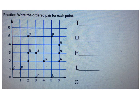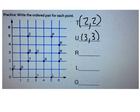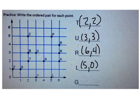Now you try a few. What's the ordered pair for point T? It's (2, 2). What's the ordered pair for point U? It's (3, 3). What's the ordered pair for point R? It's (6, 4). What's the ordered pair for point L? It's (5, 0). What's the ordered pair for point G? It's (4, 2).